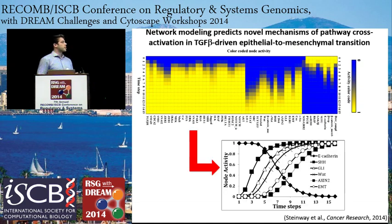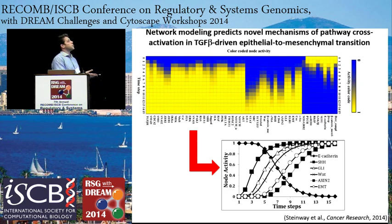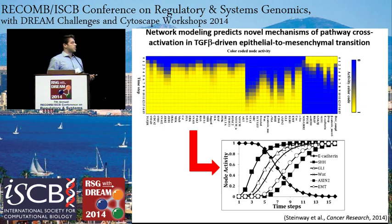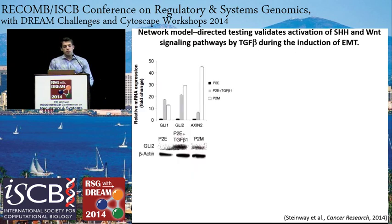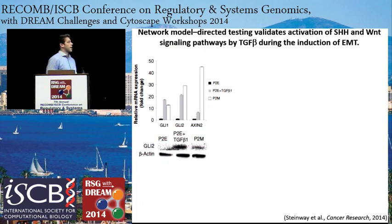Something we noticed as we constructed this network was that pathways not previously thought to be connected to TGF-beta signaling seemed to be induced by turning on TGF-beta in the context of this EMT network. We saw induction of Sonic Hedgehog and Wnt signaling. We think these weren't previously seen because no one has looked at EMT from such a systems-level context.